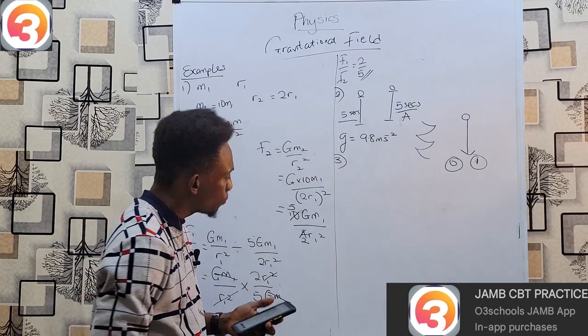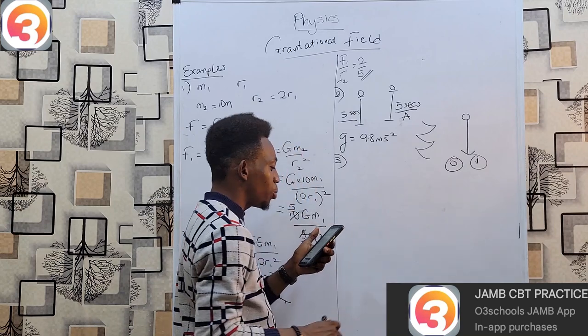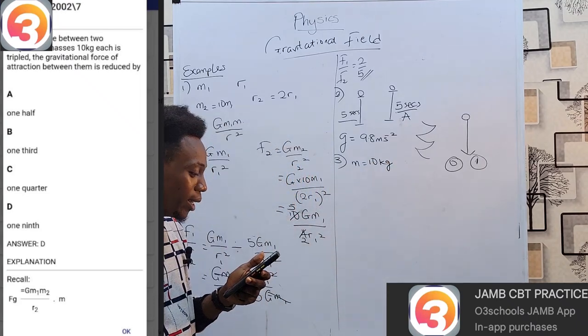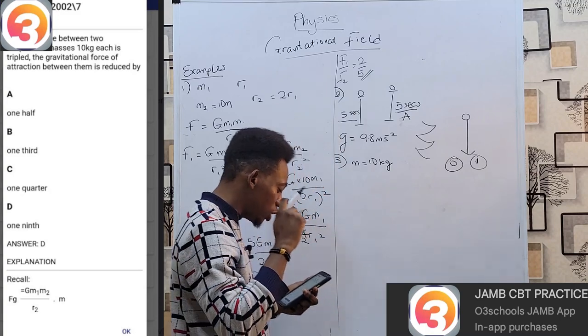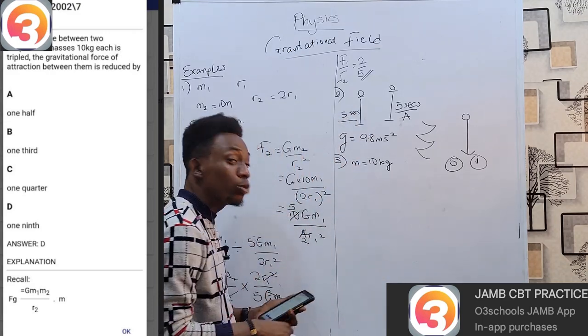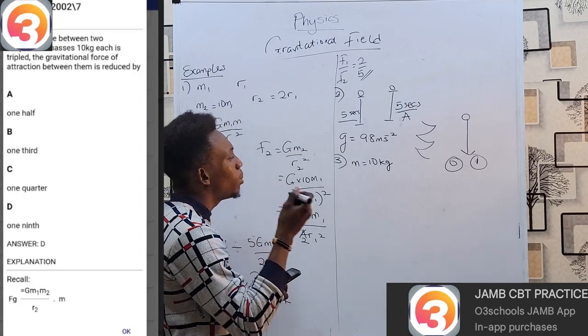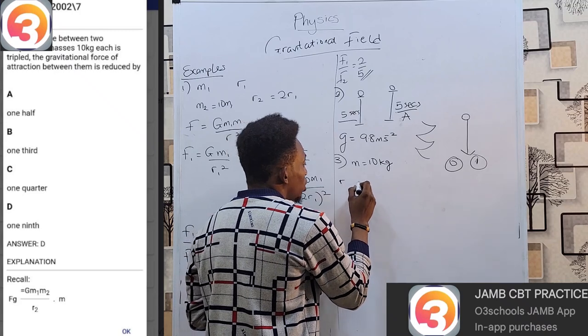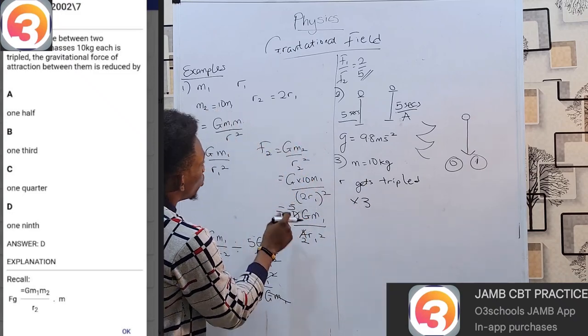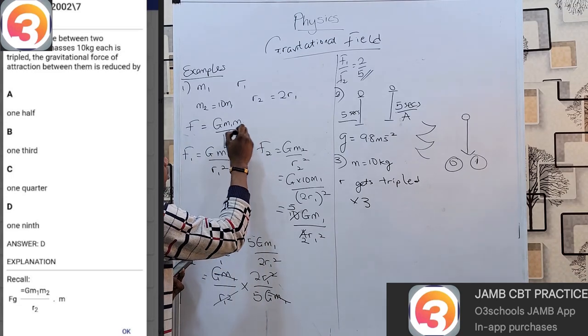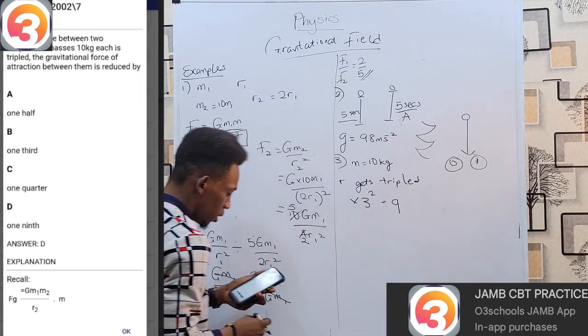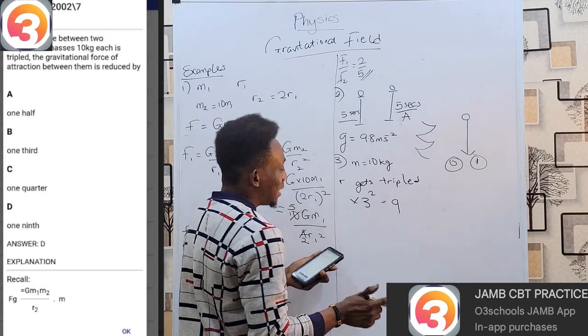We are trying the next question. This one states: if the distance between two suspended masses of 10 kg each is tripled, the gravitational force is reduced by - 2002 question 7. If the distance between two suspended masses of 10 kg is tripled, the gravitational force of attraction between them is reduced by what? This is very simple. All you have to remember is if my distance gets tripled - and tripled simply means times three - if my distance is tripled, looking at your formula with F = G m1 m2 / r², you can notice what happens: my distance gets squared. So if this is tripled, I have to square this, and that gives me 9.